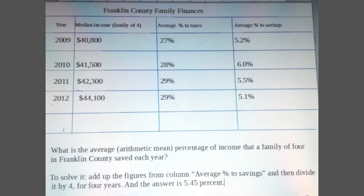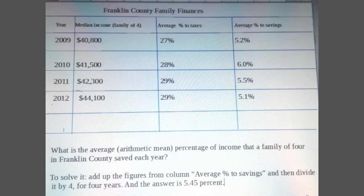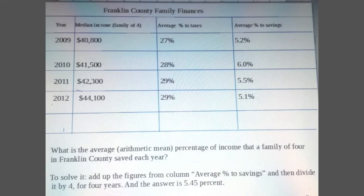This example is about graph interpretation, data, and statistics. The graph is about Franklin County family finances. It shows year, median income for a family of four, average percent to taxes, and average percent to savings. In 2009, the median income is $40,800, average percent to taxes is 27%, and average percent to savings is 5.2%. In 2010, the median income is $41,500.